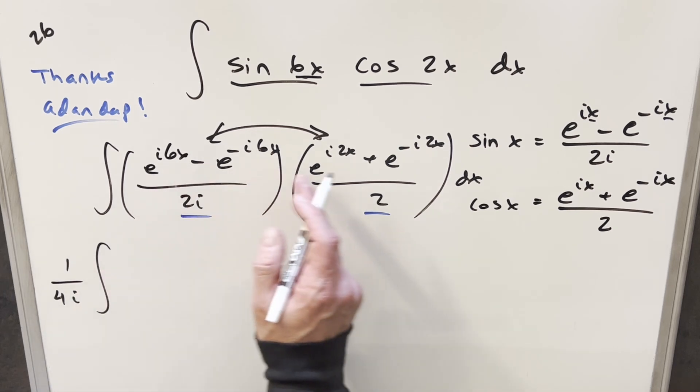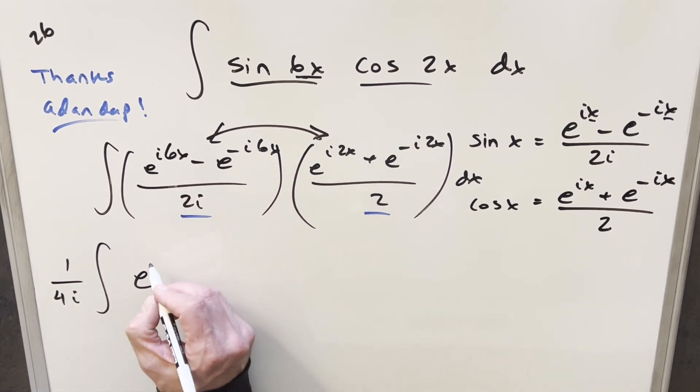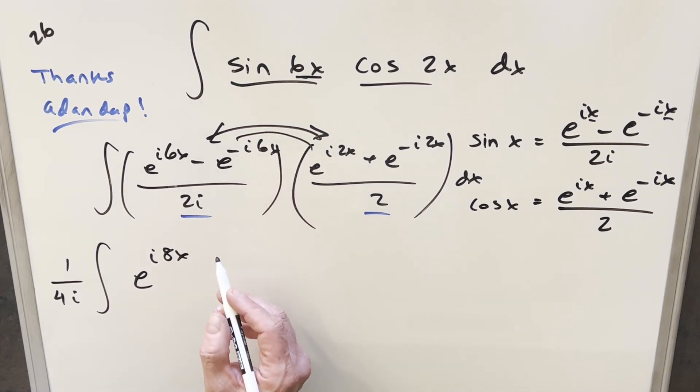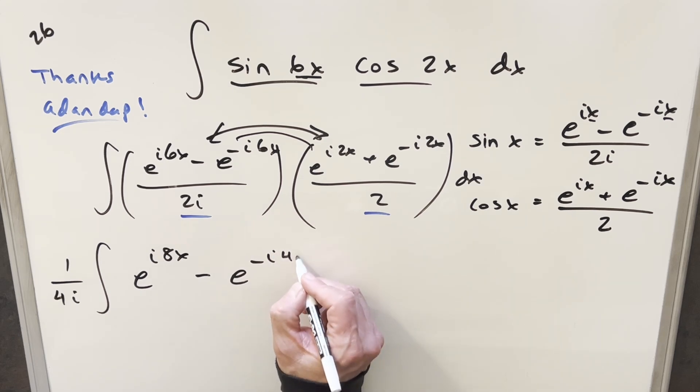And then we'll just start distributing everything together and multiplying it out. So for e^(i6x) times e^(i2x), we're going to get e^(i8x). And then for this middle term here, we're going to get, and this will become e^(-i4x).